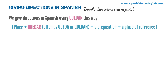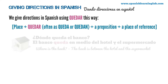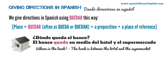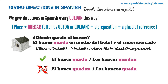We give directions using quedar this way: place plus queda or quedan, plus a preposition, plus a place of reference. For example: ¿Dónde queda el banco? El banco queda en medio del hotel y el supermercado. Since we are talking about just one place, el banco, we say el banco queda, not el banco quedan. Quedan is used for several places. Here we use the preposition en medio de with hotel and supermercado as places of reference.